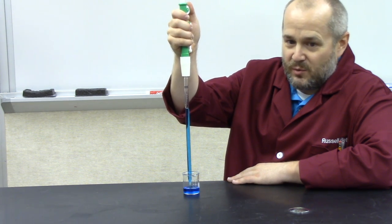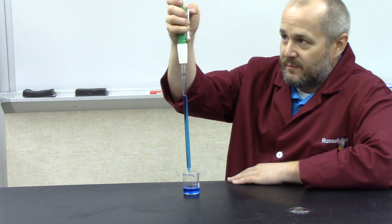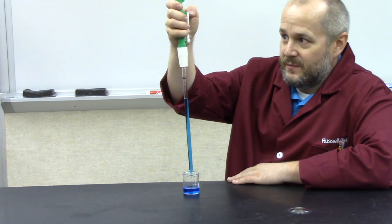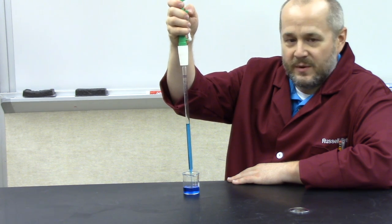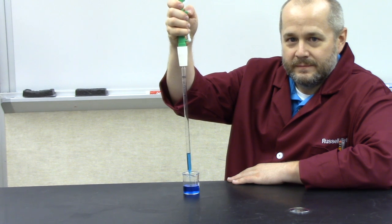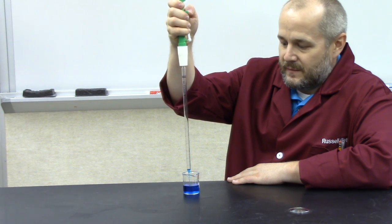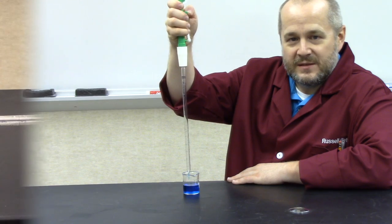Once you've got the meniscus where you want it, simply transfer the liquid to another beaker. Or, I'm just going to pour it back into the same beaker. Do this by hitting this little trigger right here. Push it in, and the liquid comes out. And there it is. That's how you use a pipet.